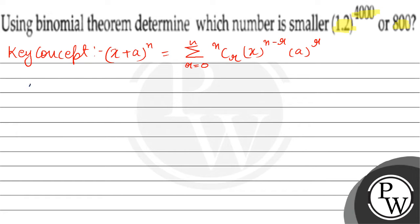1.2 raised to power 4000 — isko hum likh sakte hain as (1 + 0.2) raised to power 4000. Ab isko x aur isko a maan lete hain.